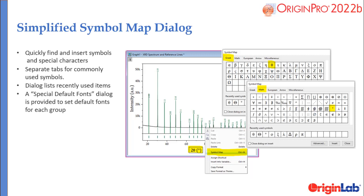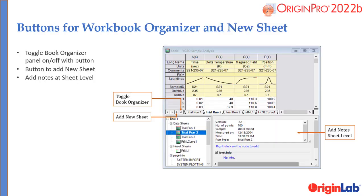The Symbol Map dialog has been simplified to make it easy to find and insert your favorite symbols and special characters. The dialog has categorical tabs, and recently used items are displayed for easy access.